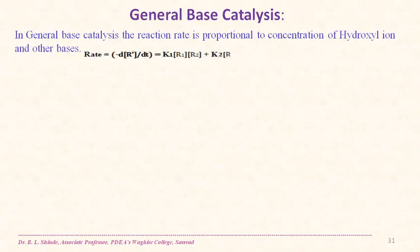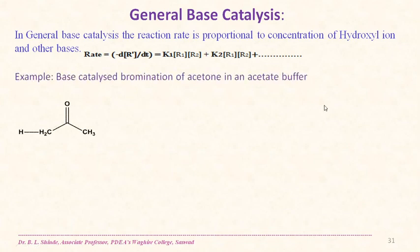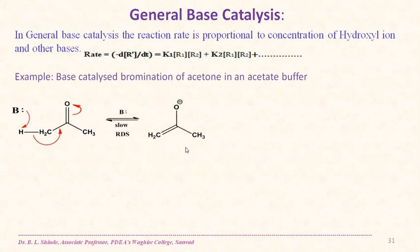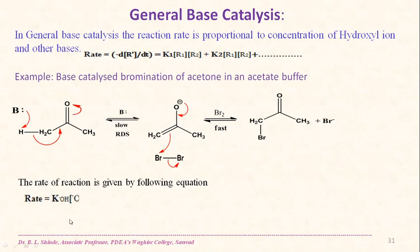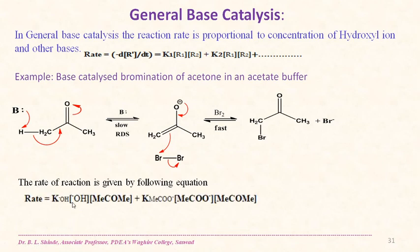In general base catalysis, the reaction rate is proportional to the concentration of hydroxyl ion and other bases. An example is the base-catalyzed bromination of acetone in acetate buffer. A base abstracts a proton to give the enolate anion, which then reacts with the bromine molecule to give bromoacetone. The rate is: rate = k[OH⁻][OH⁻][acetone] + k[acetate⁻][acetate⁻][acetone], since acetate ion also acts as a base.